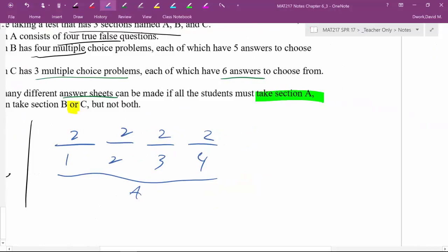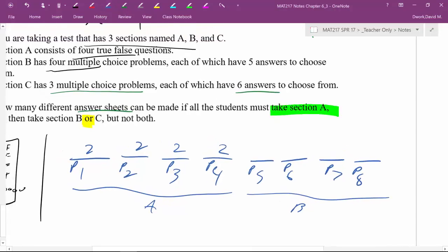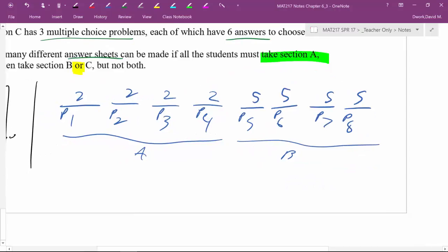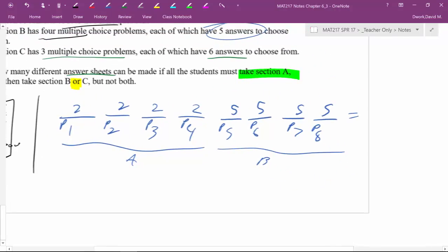Now, the students who choose section B will now have four more decisions to make. Right? They have four more. And so problem five, six, seven, and eight. Right? Now, maybe I'll make these problems sub one, sub two, sub three, sub four. So that way it doesn't look like they're like multiplying. So problem five, how many choices do I have for problem five? Well, if they're doing section B, they have five different answers to choose from. So five choices. And then similarly, five and five. Right? So, this would be the number of ways to have answer blanks if a student chose to do section A, then B.